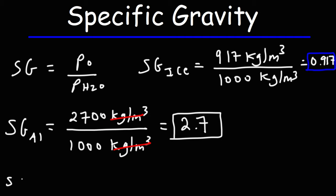Now when the specific gravity of a substance relative to water is less than one, that object is going to float in water. When the specific gravity is greater than one, that object will typically sink in water.